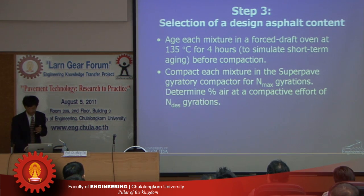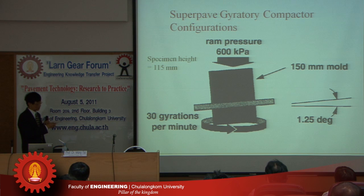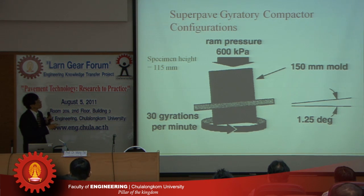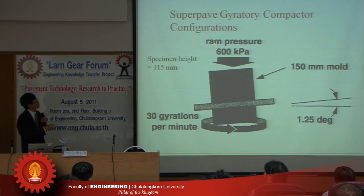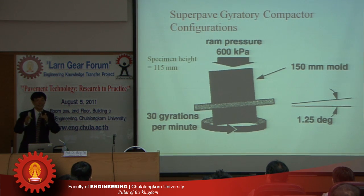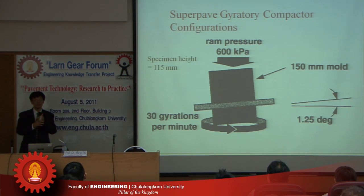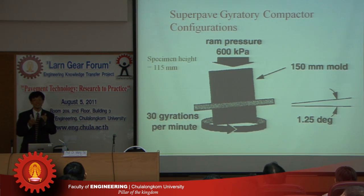The mixture is compacted in a gyratory compactor. The mixture is placed into a cylindrical mold. The compactor is set at an angle of 1.25 degrees with a ram pressure of 600 kilopascals. The compactor rotates, and the higher the number of rotations, the greater the compaction effort. The main purpose of compaction is to compact the specimen so that it simulates the actual in-field condition.